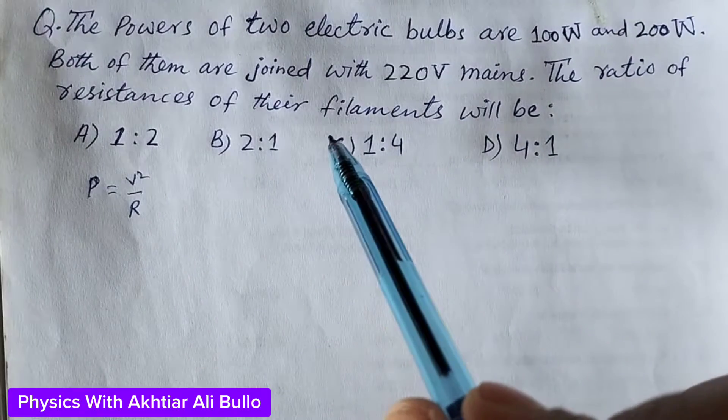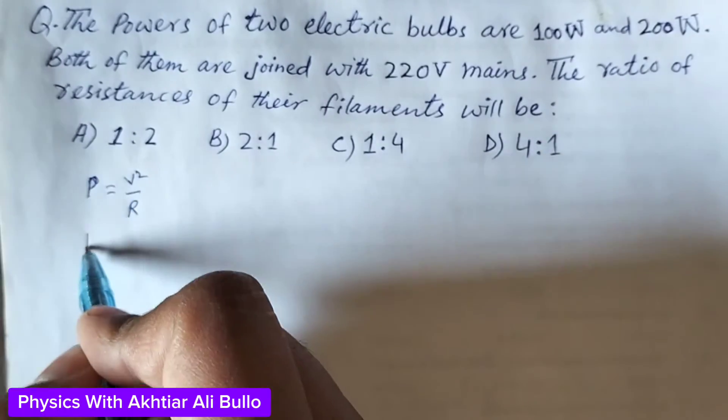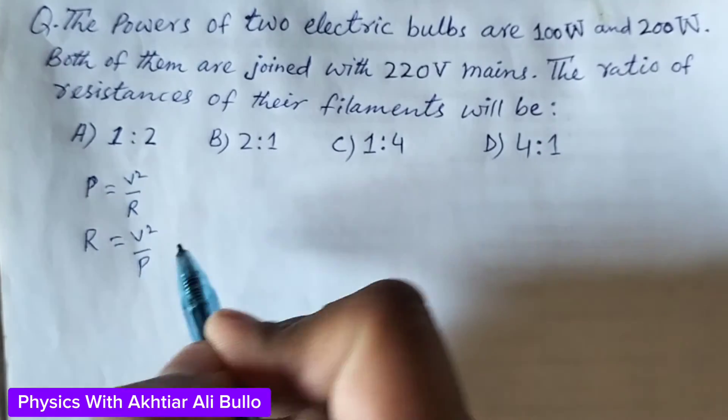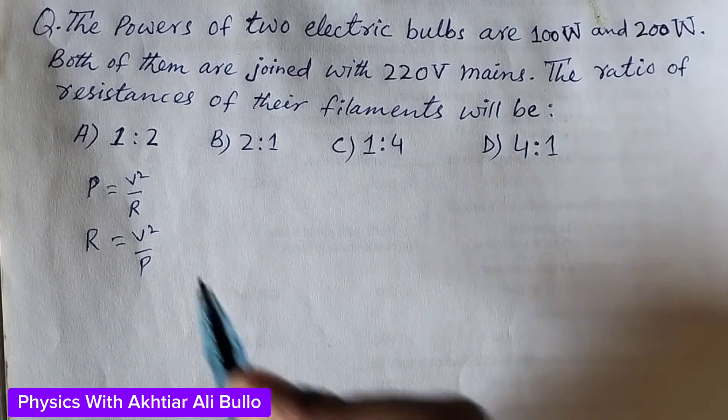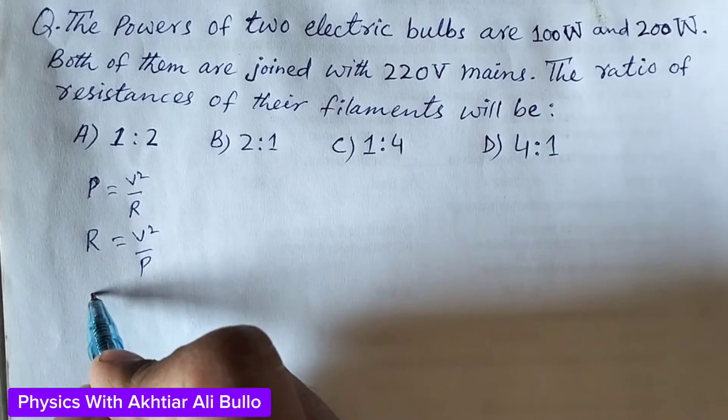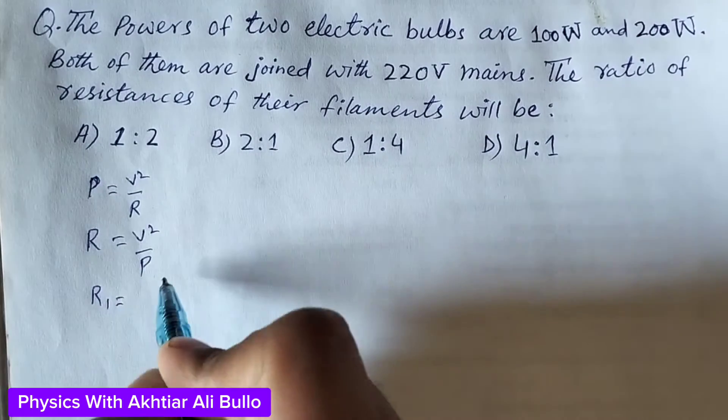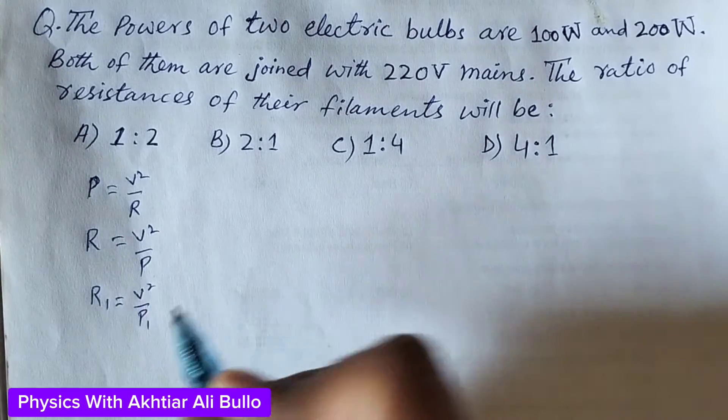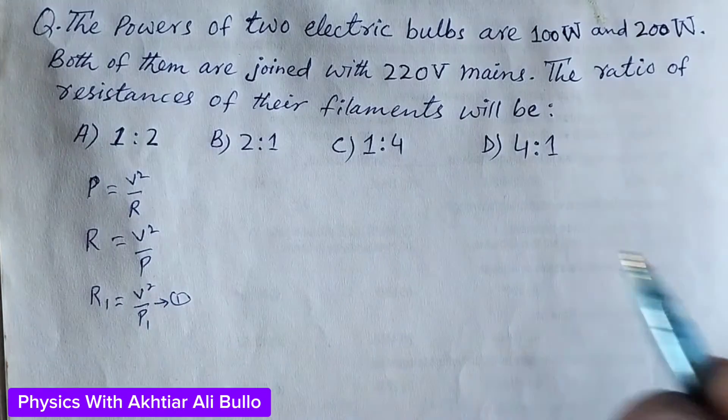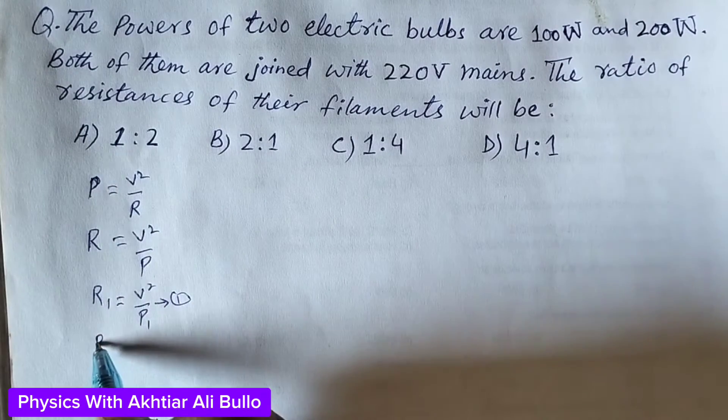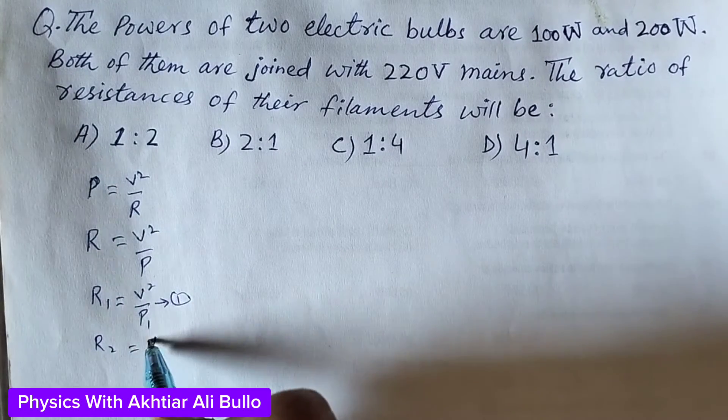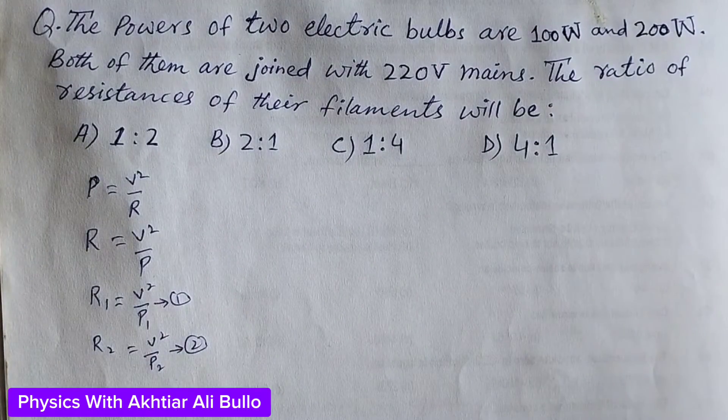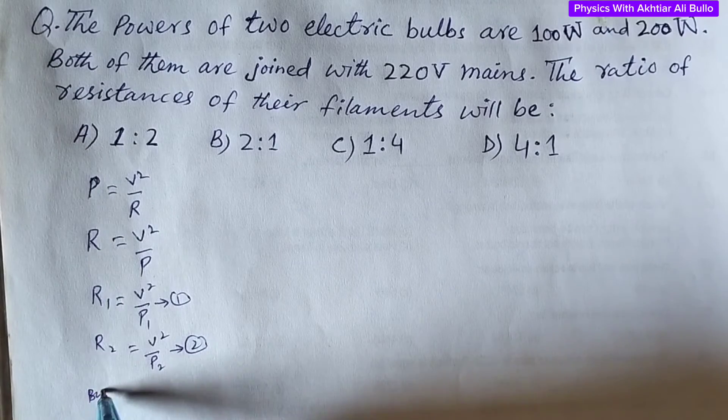So this will become R is equal to V squared upon P₁. This is equation number 1. R₂ is equal to V squared upon P₂. This is equation number 2.